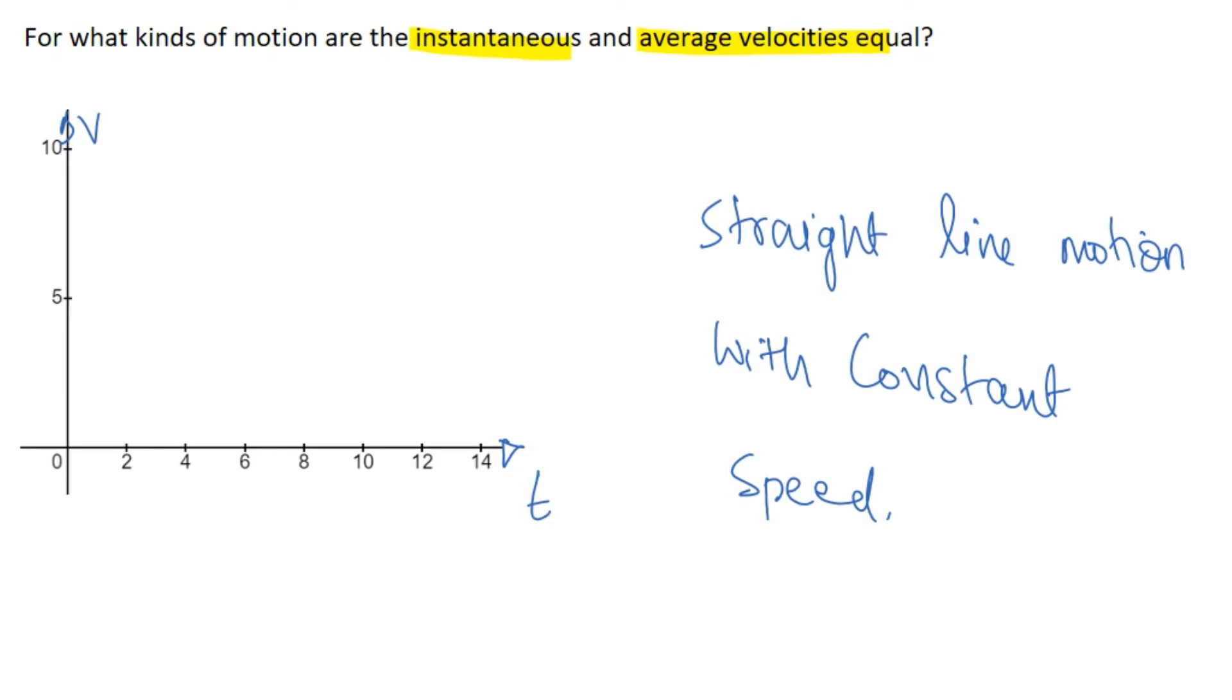Now suppose the speed of a car is not changing with respect to time. So the graph would be something like that. And in this motion the instantaneous velocity and the average velocity are equal.